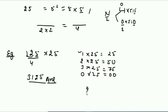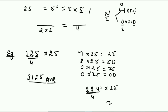Let me take one more example: 284 multiplied by 25. Divide 284 by 4. I can't subtract from 2, so take 28: 28 divided by 4 is 7. Bring down 4: 4 divided by 4 is 1, remainder zero. Zero remainder means last two digits are 00. So the answer is 7100.